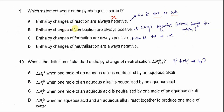Option B — enthalpy change of combustion is always positive. We know that when something is burned we can feel the heat, because heat is released from the system. Whenever heat is released from the system it is always exothermic, meaning it's negative. So B is wrong.